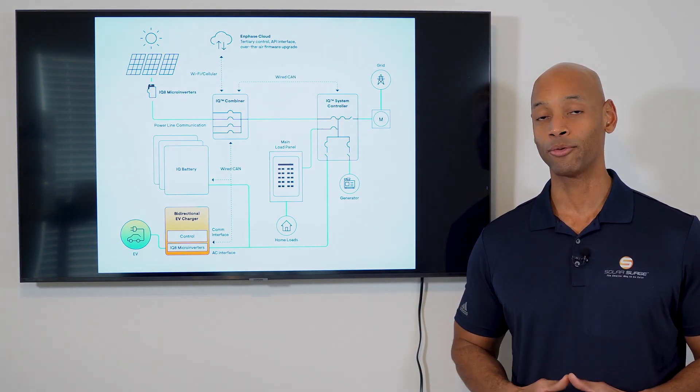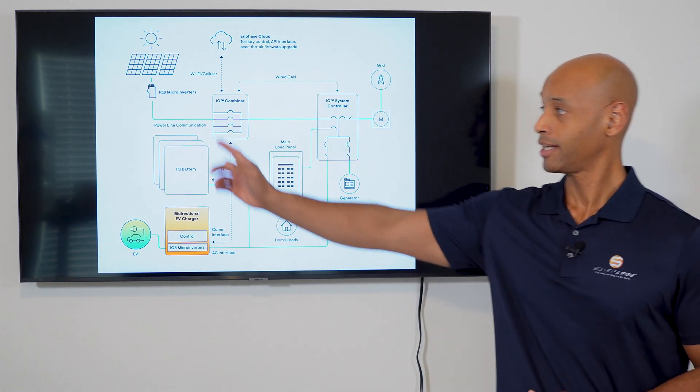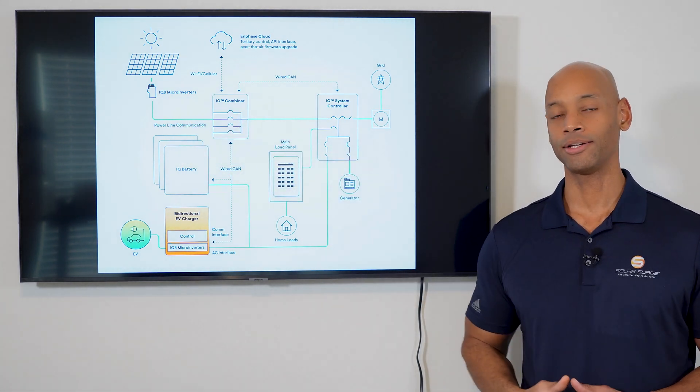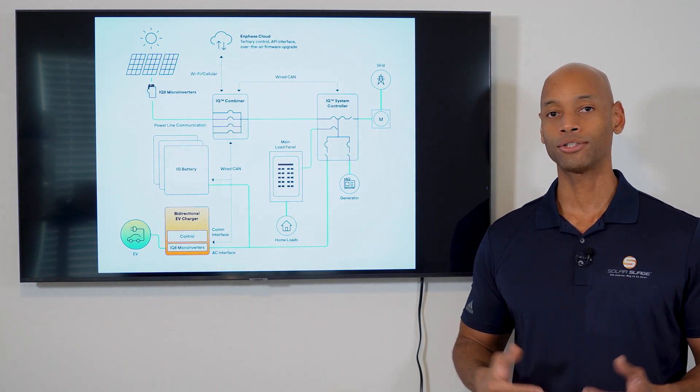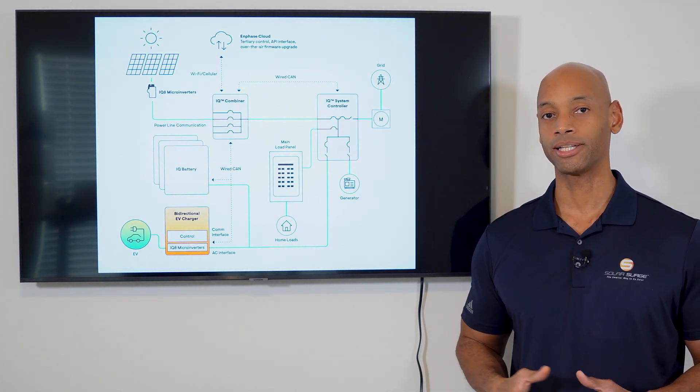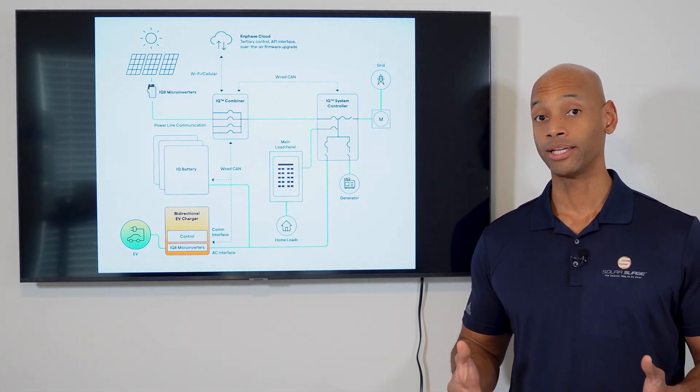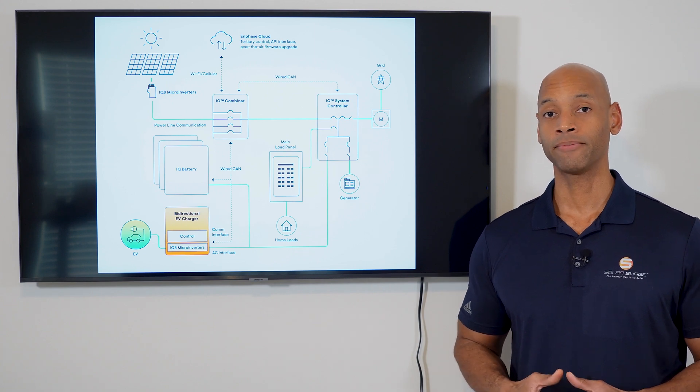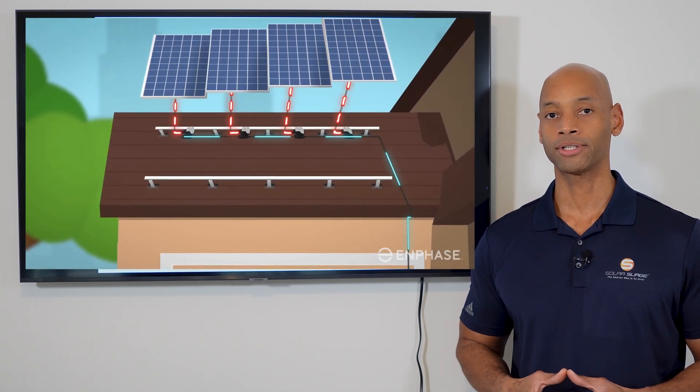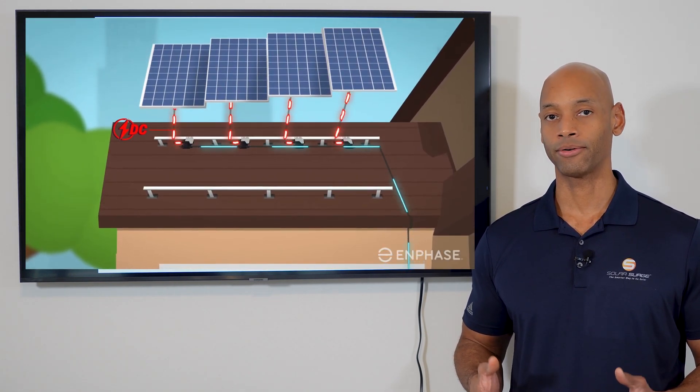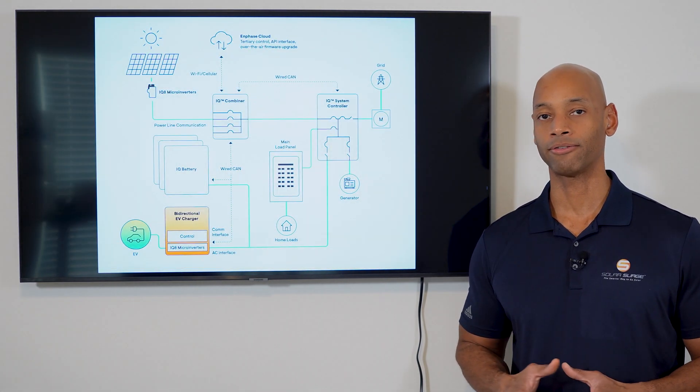On today's video we're going to be doing a deep dive on the new Enphase Solar System, which is centered around the Enphase IQ8 series microinverters. Now as many of you know, all solar power systems that are hooked up to the electric grid have to have some type of inverter system. What the inverter does is it converts DC power that natively comes off of your solar panels into usable alternating current or AC power, which is what the electric grid is wired for, what our homes are wired for.